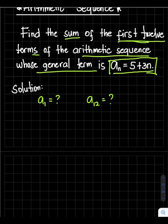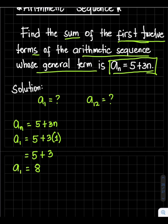So just substitute: a_n = 5 + 3n. For the first term, n = 1, so a_1 = 5 + 3(1) = 5 + 3 = 8. This is our first term. Then, how about the 12th term?